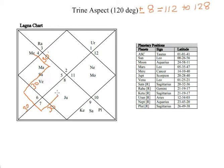Now to Scorpio 14 degrees, another 30 degrees. So from Mercury at 14 degrees Cancer to 14 degrees Scorpio, Mercury has traveled 30 plus 30 equals 60 degrees, plus 30 equals 90 degrees, plus 30 equals 120 degrees — a total of 120 degrees.